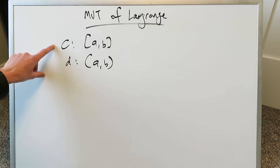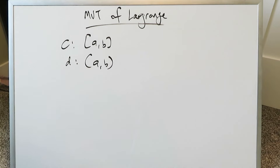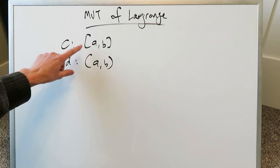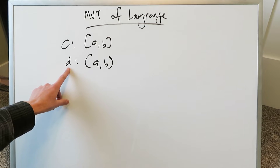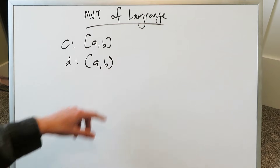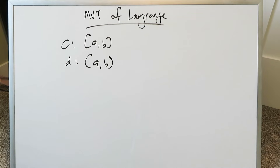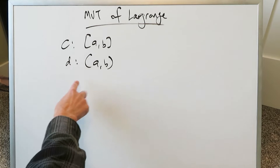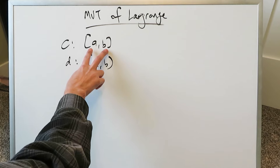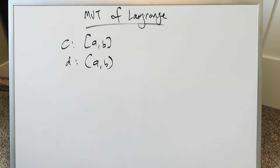The mean value theorem applies to those functions where you have continuity over a closed interval [a, b], and differentiability over the open interval (a, b). Normally, polynomial functions, rational functions, trigonometric functions, and radical functions automatically satisfy this, so long as the values a and b fall within the domain of those functions.